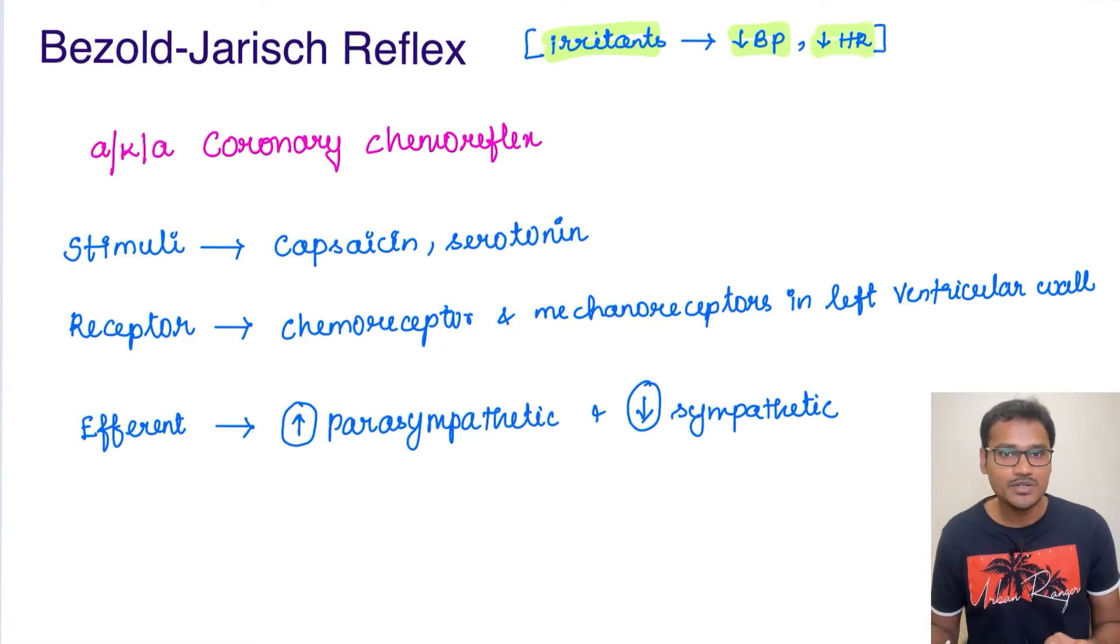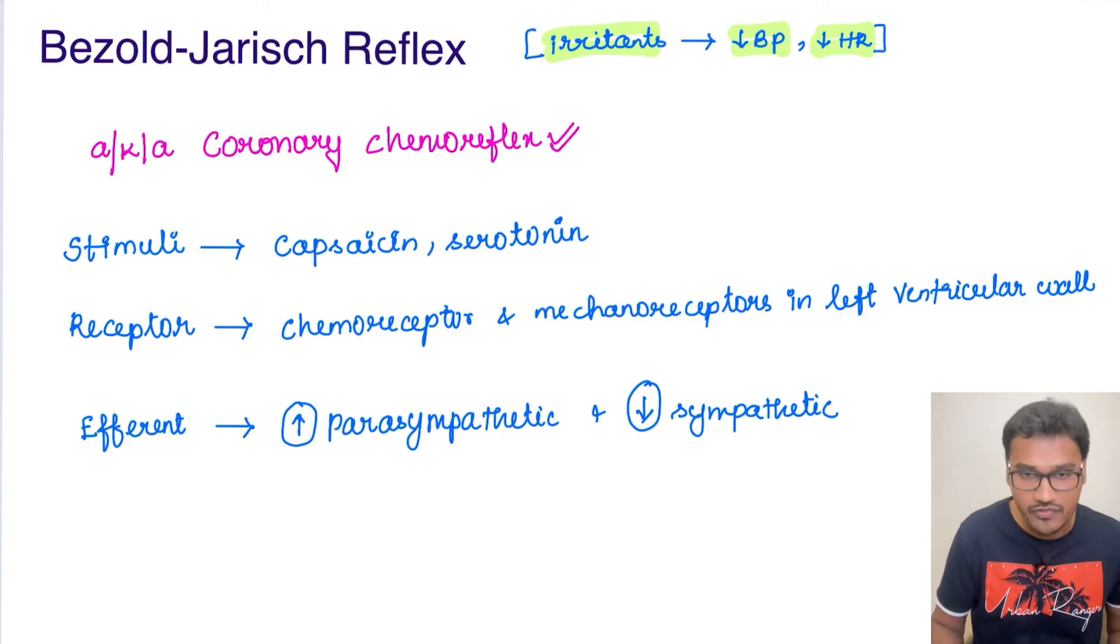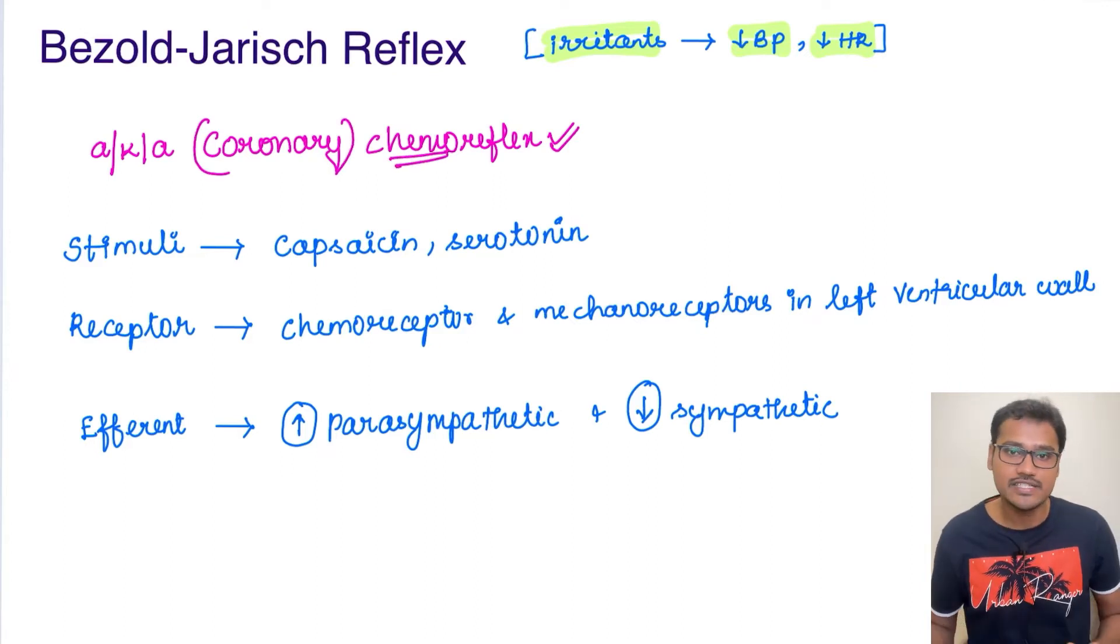This Bezold-Jarisch reflex is also called as coronary chemoreflex. Chemoreflex means it is responding to the chemicals, and the coronary system, that is the cardiovascular system, is responding to these chemicals.